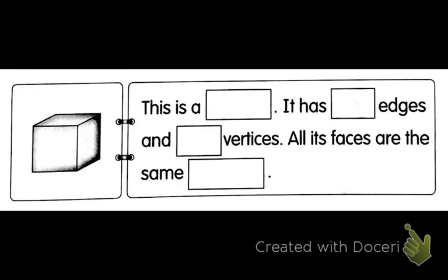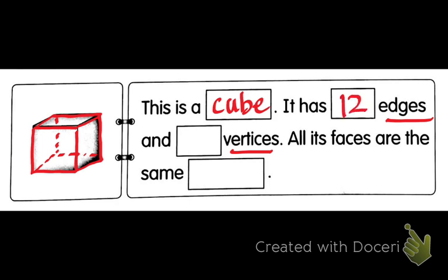It's a cube. This is a cube. It has how many edges and how many vertices? Same with cuboid. Let's count the straight edges: one, two, three, four, five, six, seven, eight, nine, ten, eleven, twelve. Twelve edges. And how many vertices? One, two, three, four, five, six, seven, eight. Eight vertices. All its faces are the same size.